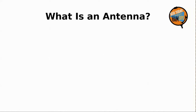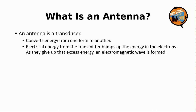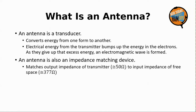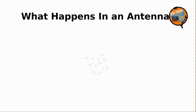An antenna is a transducer. It converts electrical energy into electromagnetic energy. It is also, or at least you hope it is, an impedance-matching device that matches the output impedance of your transmitter, probably 50 ohms, to the input impedance of the universe, known as free space, which is about 377 ohms.